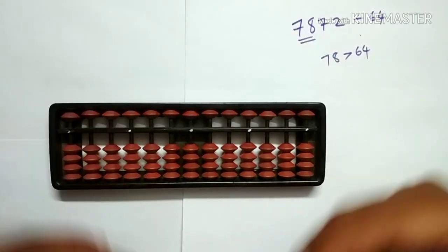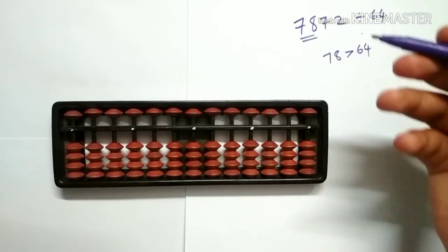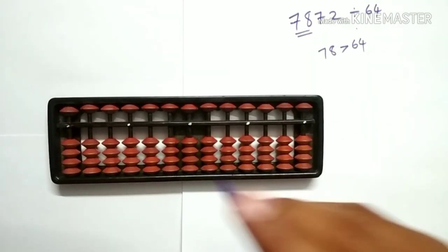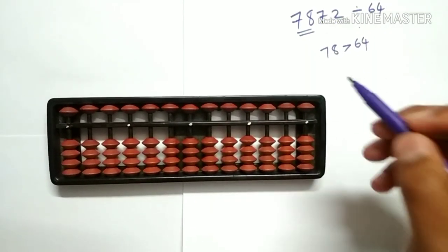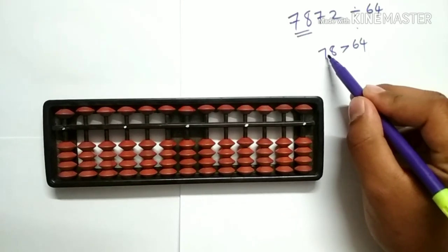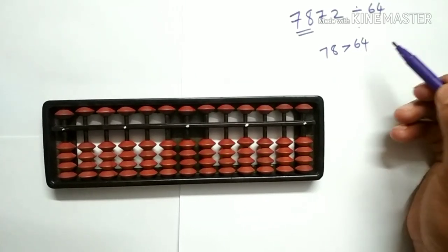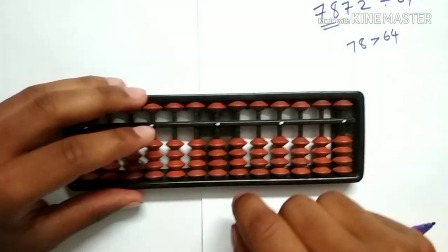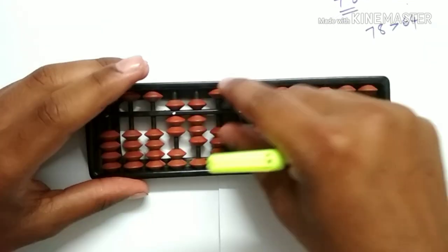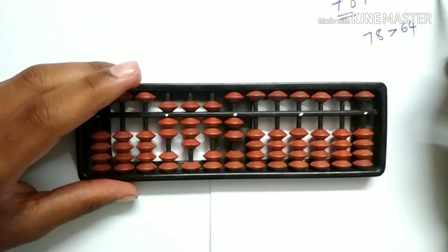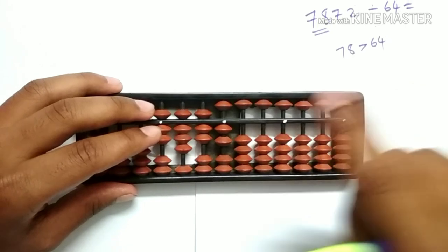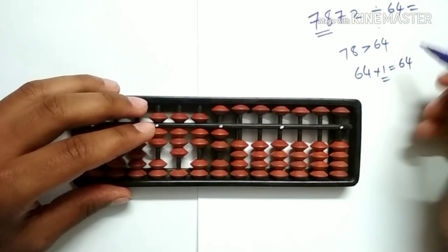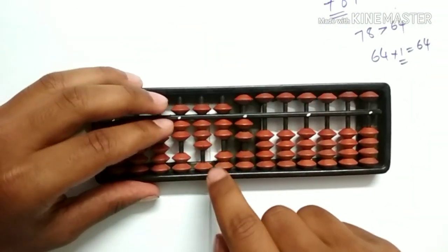Let's check the nearest multiple of 78 in the table of 64. Now 64 into 1 is 64 and 64 into 2 is 128. Because 128 is greater than 78, we will go for 64 into 1 equals 64. Let's subtract 64 from 7872. Let's place 7872 on the abacus and subtract 64, because 64 into 1 equals 64. So let's write 1 in the quotient and subtract 64 from the dividend.